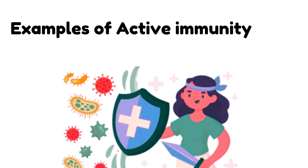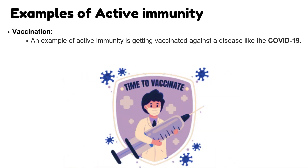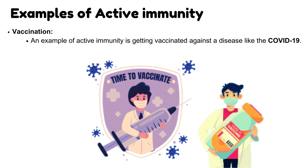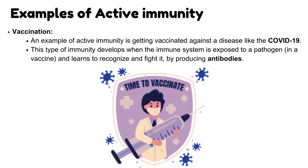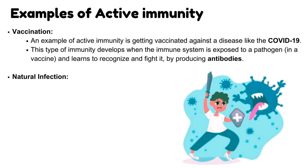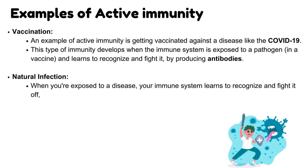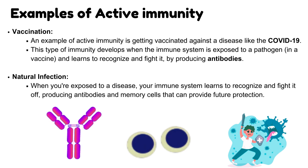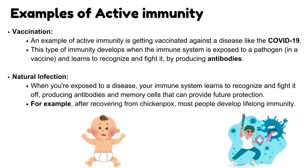Examples of active immunity: Vaccination — getting vaccinated against a disease like COVID-19, where the immune system is exposed to a pathogen in a vaccine and learns to recognize and fight it by producing antibodies. Natural Infection — when you're exposed to a disease, your immune system learns to recognize the pathogen and fight it off by producing antibodies and memory cells. For example, after recovering from chicken pox, most people develop lifelong immunity.